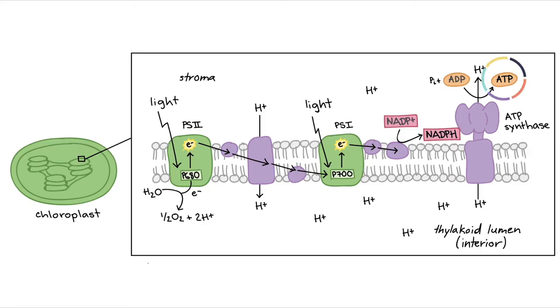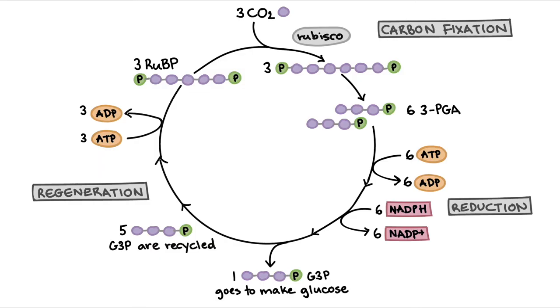That is how ATP and NADPH are created in the light-dependent reaction. These will now be the start for the next step, the Calvin cycle. The light-dependent reaction is a key component in photosynthesis — and it's loads of fun!